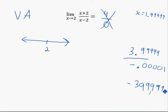At 2, we know there's an asymptote, and what we just found out here by plugging in numbers a little bit less than 2 is this is going to be going down to negative infinity on this side.